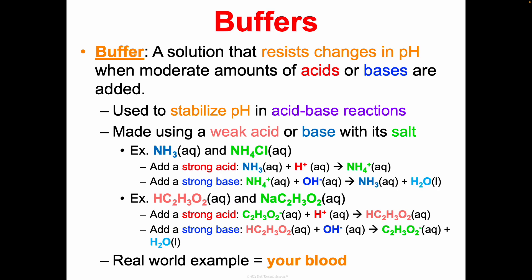Blood is a key example of a buffer — your blood pH is 7.4, ranging from 7.35 to 7.45 normally. Anything above 7.8 or below 6.8 would be fatal, so it's a very tiny margin. When carbon dioxide dissolves in water it makes carbonic acid, and carbonic acid and the HCO₃⁻ ion work together: if hydroxide ions are added, carbonic acid reacts with them; if hydrogen ions are added, HCO₃⁻ takes them up and makes more carbonic acid — stabilizing blood pH.